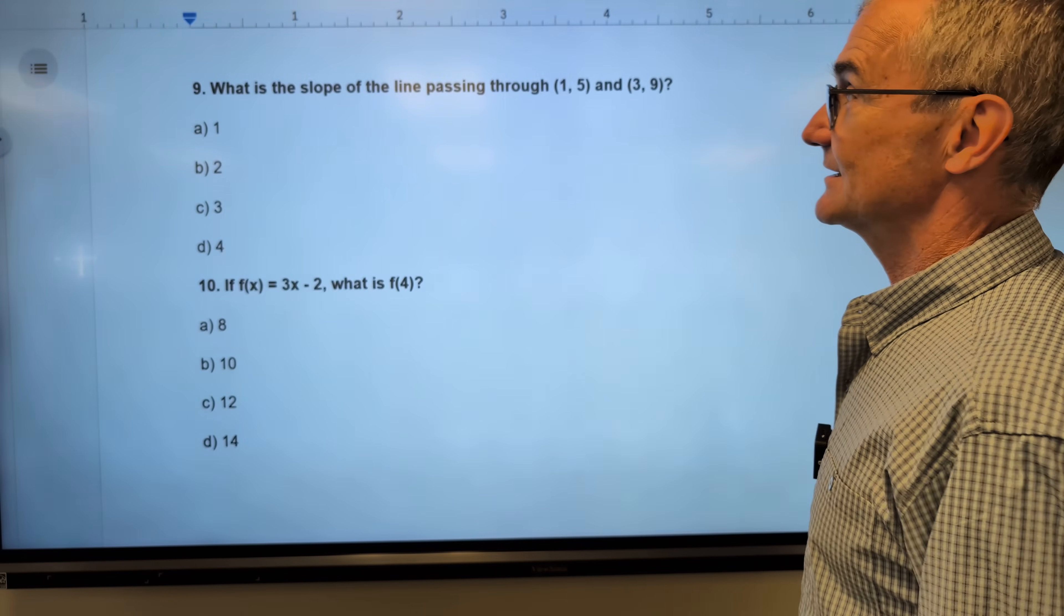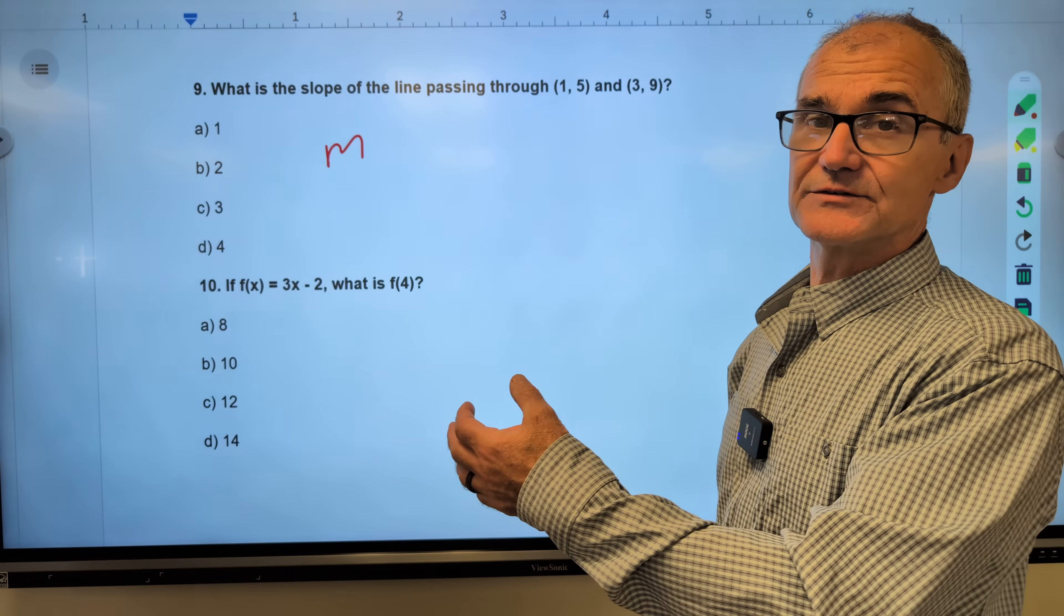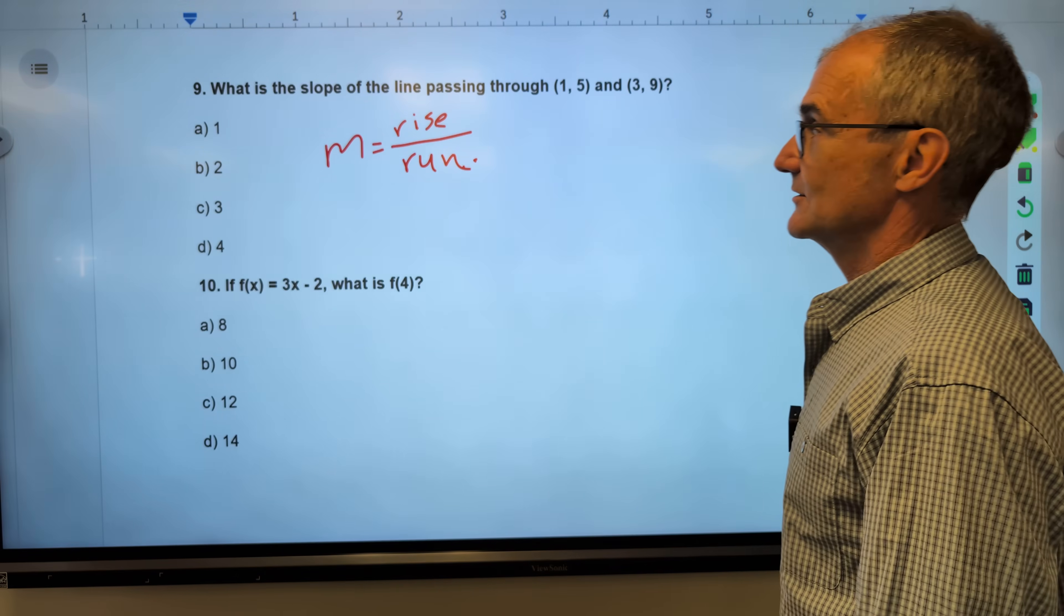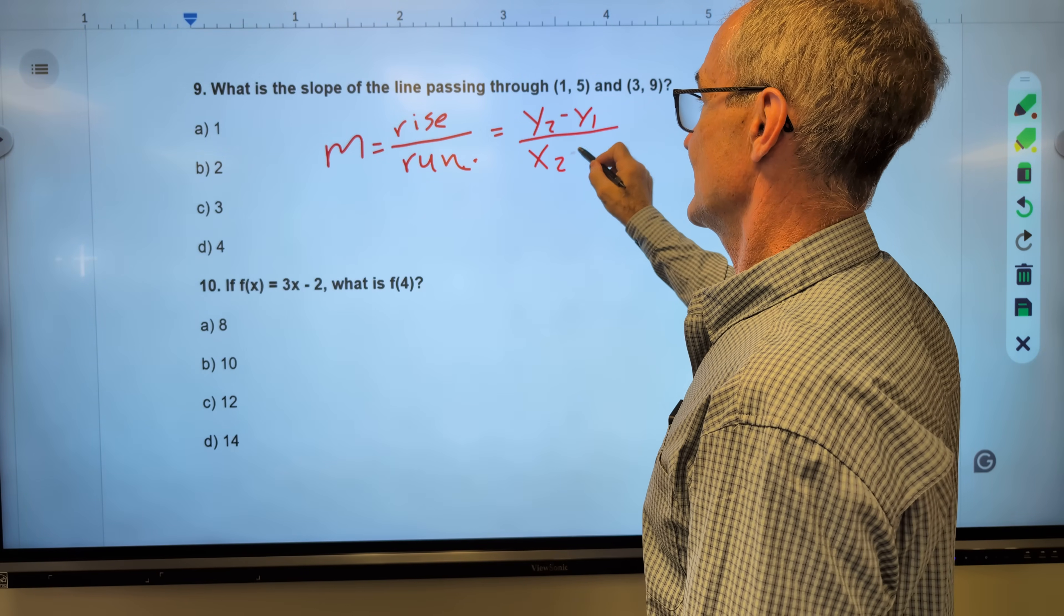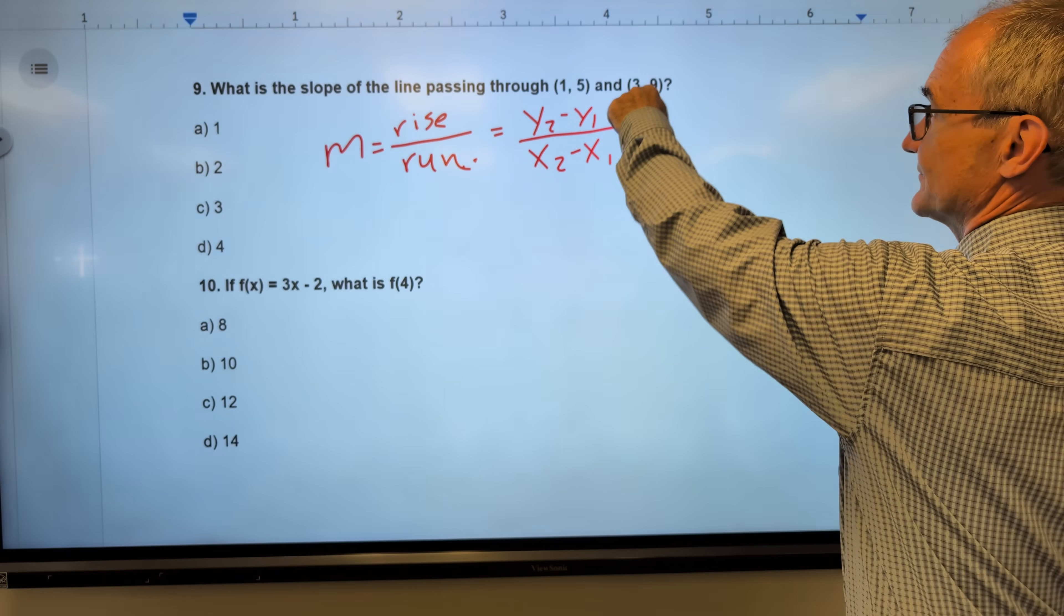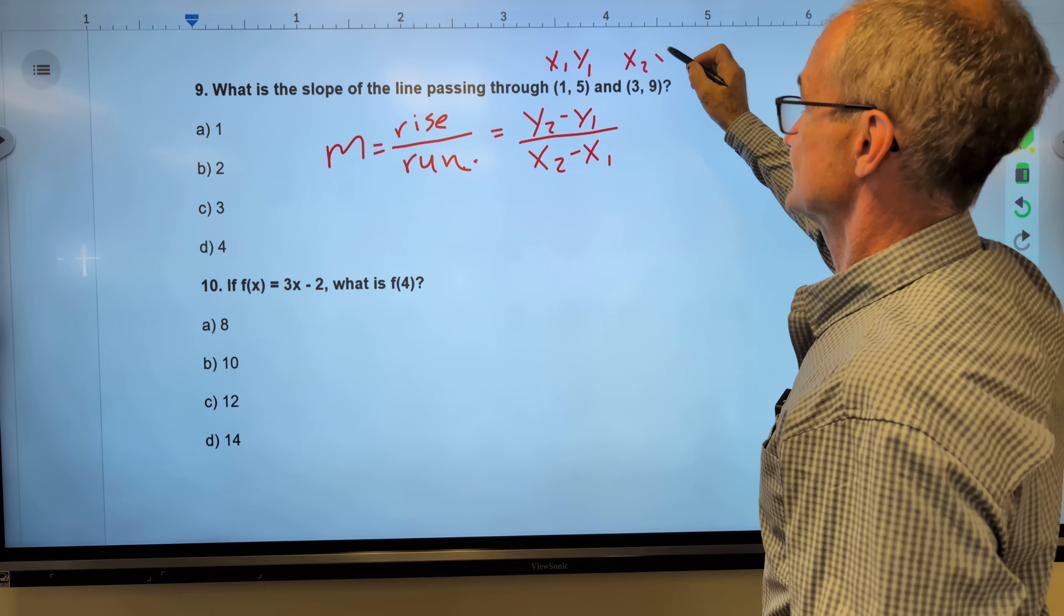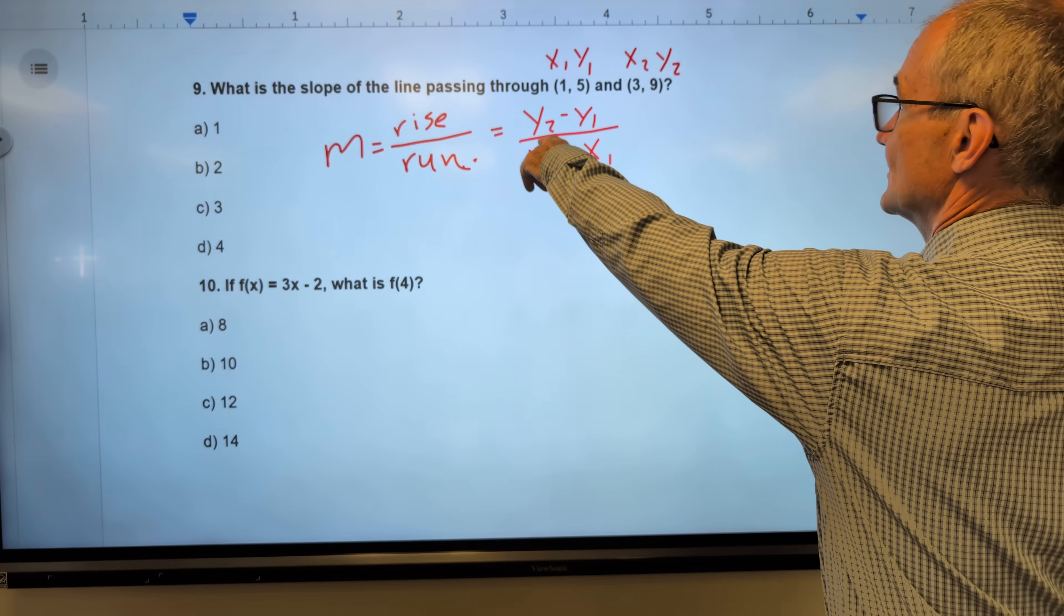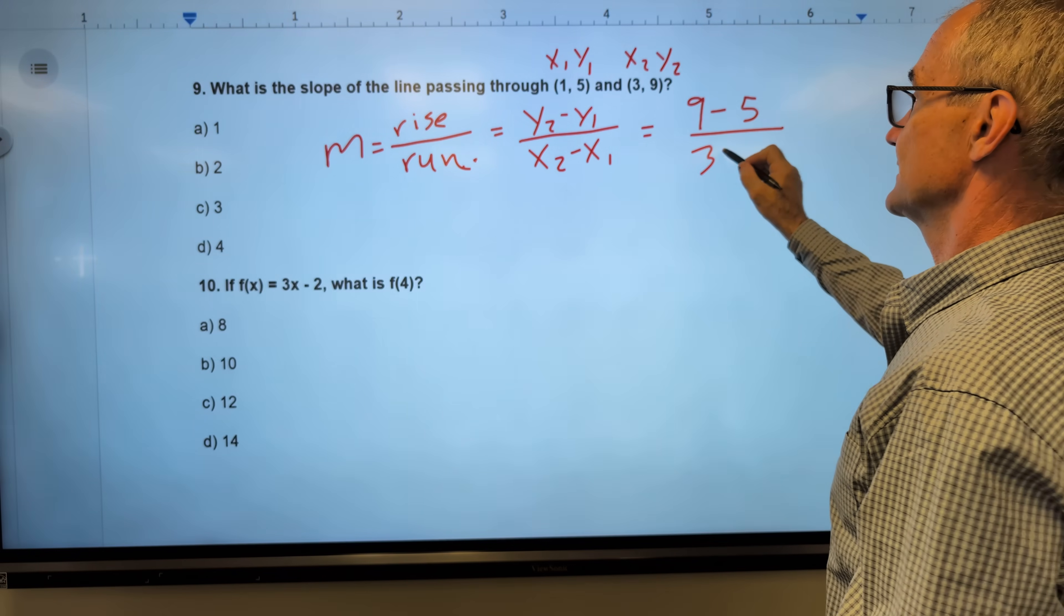A couple more problems here. What is the slope of the line passing through these points? Remembering M is a letter we reserve for slope. It is the rise over the run. The rise is up and down, so it's a change in y values over the change in x values. It doesn't matter which point I call my first or my second, but once I call this my first point, or this my first point, then this has to be x1, y1. This has to be x2, y2. This is an ordered pair, x always before y.